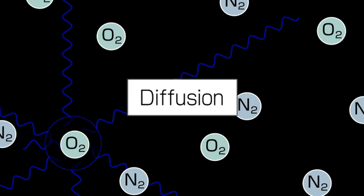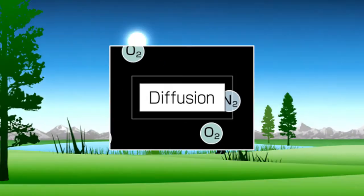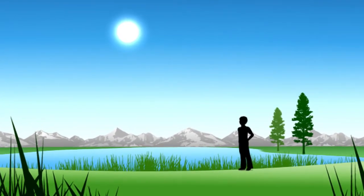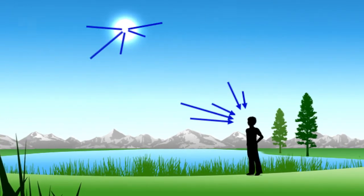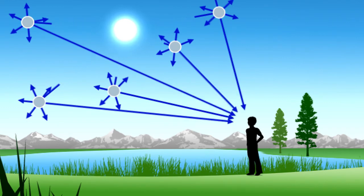The shorter the wavelength, the greater the diffusion. That means blue light is diffused more than red light, so overall, the sky appears blue.